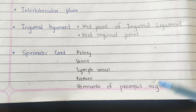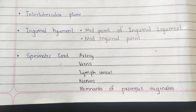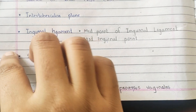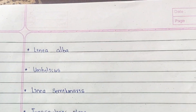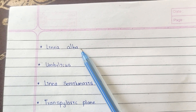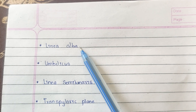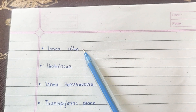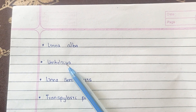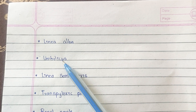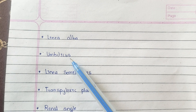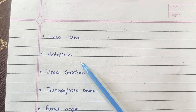Near or around the spermatic cord we can also find the remnants of processus vaginalis, which are the remnants of peritoneal outpouching from embryonic development. In the anterior abdominal plane, we can find a median furrow which stands for the underlying linea alba, also known as the white line. Just below the midpoint of the linea alba lies the depressed or elevated area known as the umbilicus.